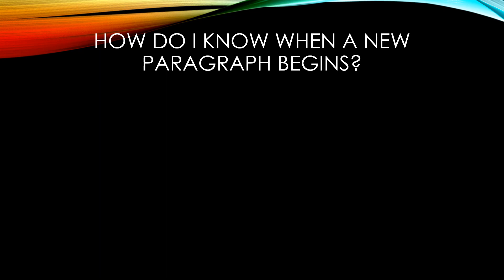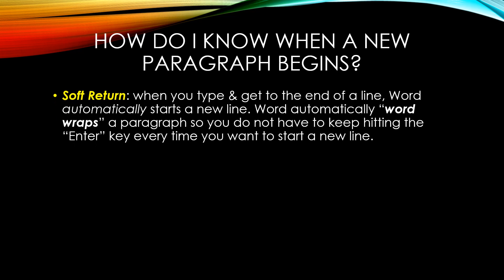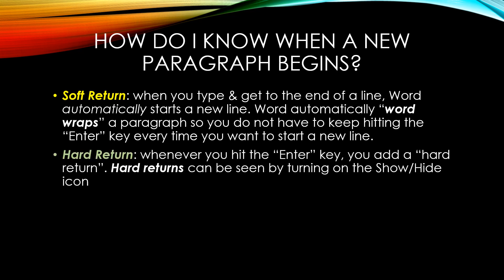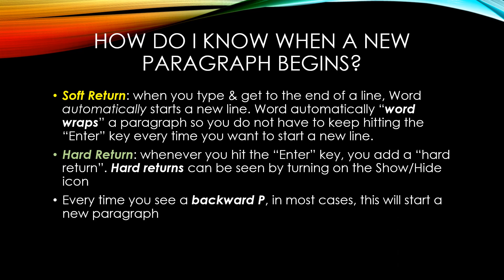How do I know when a new paragraph begins? In Microsoft Word, there is what you call a soft return and a hard return. When you type and get to the end of a line, Word automatically starts a new line — this is called word wrap. The hard return is whenever you hit the Enter key, adding a hard return. A hard return can be seen by turning on the show hide icon or the formatting marks. Every time you see a backwards P at the end of a paragraph, in most cases this will indicate the start of a new paragraph.